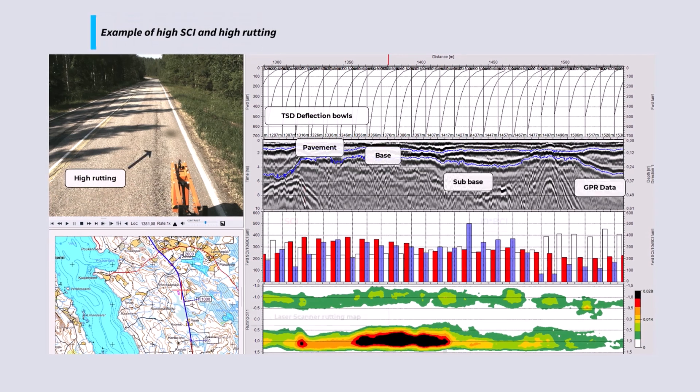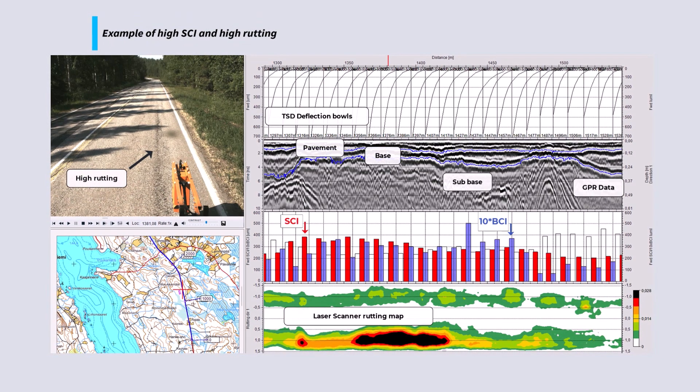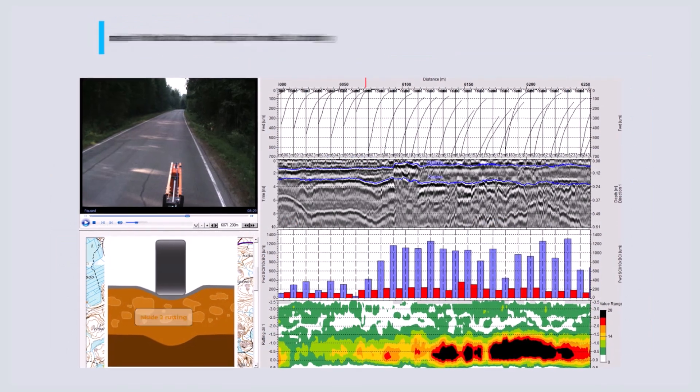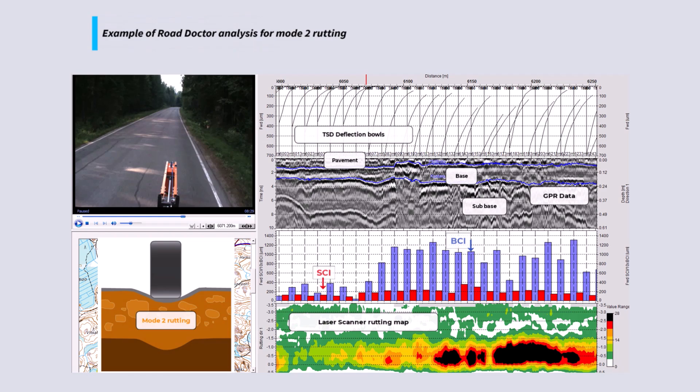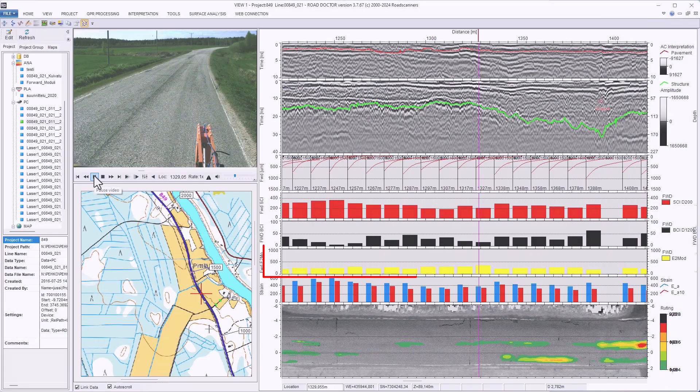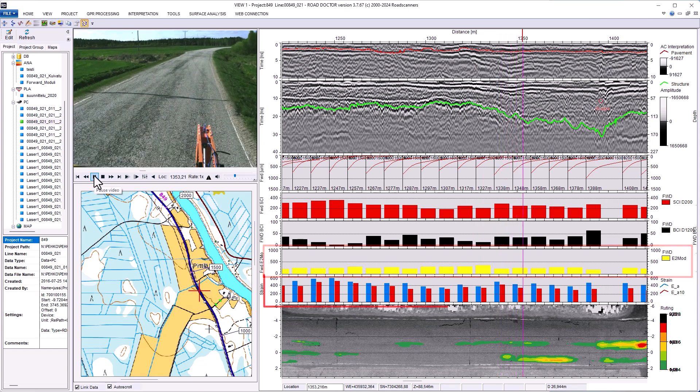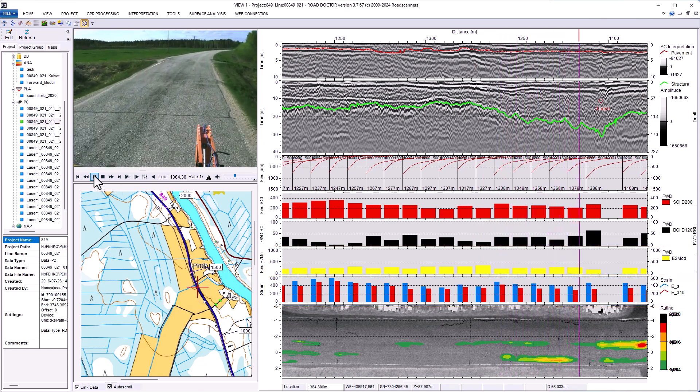The RoadDoctor provides information about risk for mode 1 rutting and deformation in the top part of the pavement structure. The RoadDoctor provides information about risk for mode 2 rutting, E2 values, as well as horizontal strain at the pavement bottom and subgrade modulus.